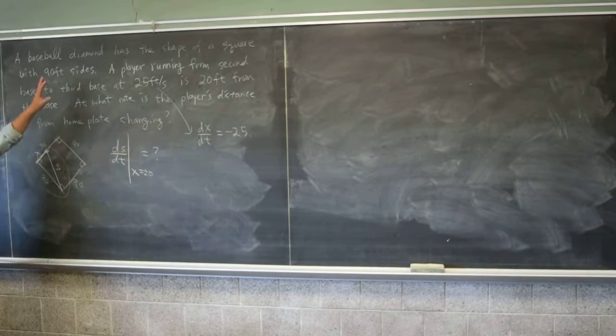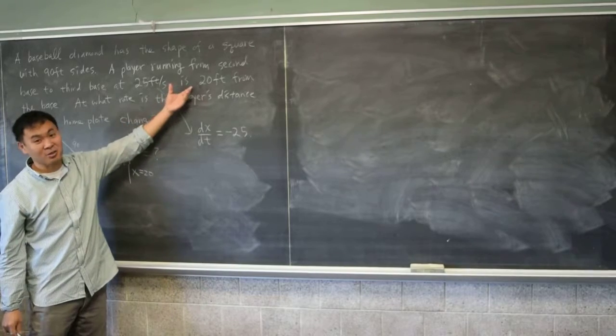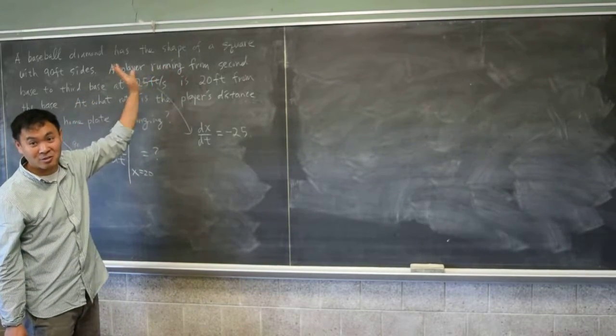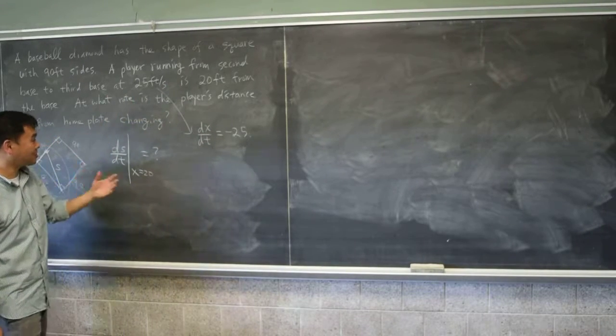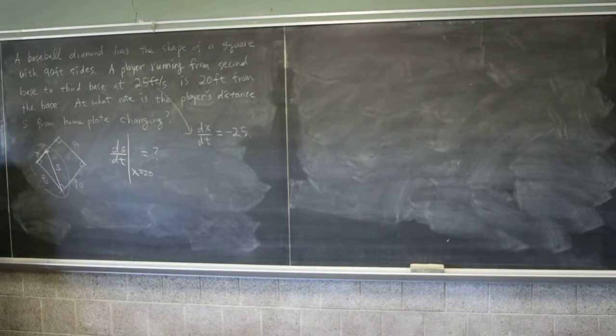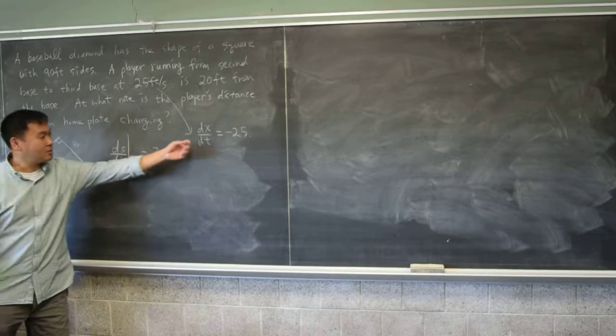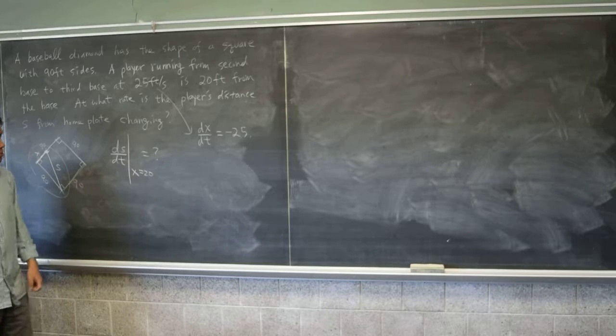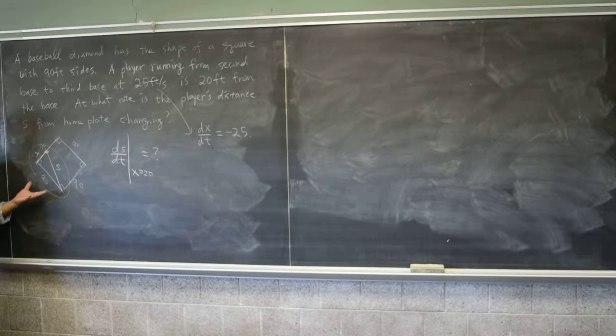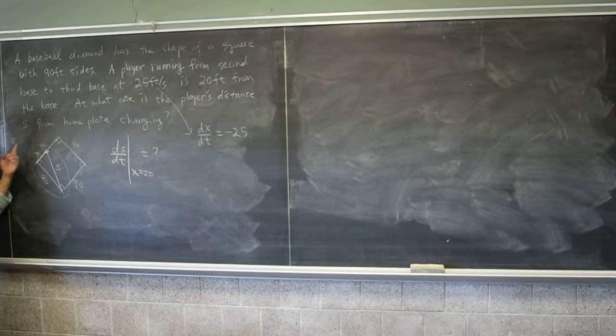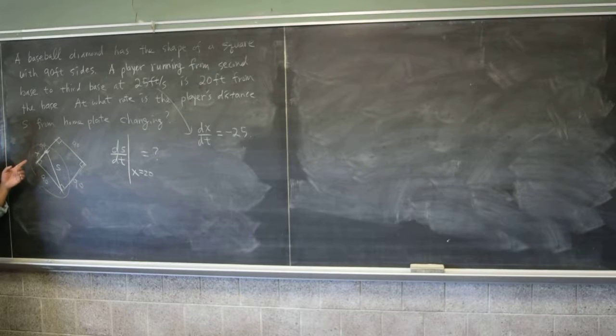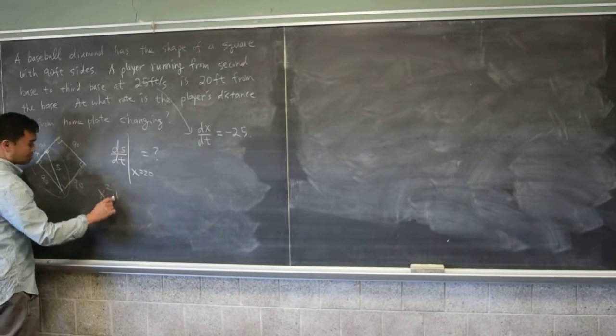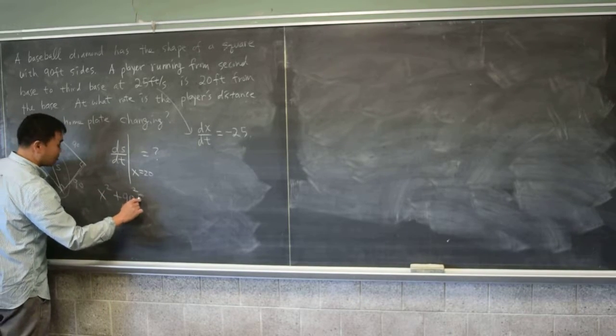So this was a little tricky because it didn't follow the standard word when. Usually when is explicitly there and you can easily pick it up, but here you have to think a little bit. So that's the rate of change of one variable and you're asking the rate of change of another given some condition. And you have the relationship that you can get from here. What's the relationship between x and s? Pythagorean theorem. Pythagorean theorem, right? So it's x squared plus 90 squared equal to s squared.